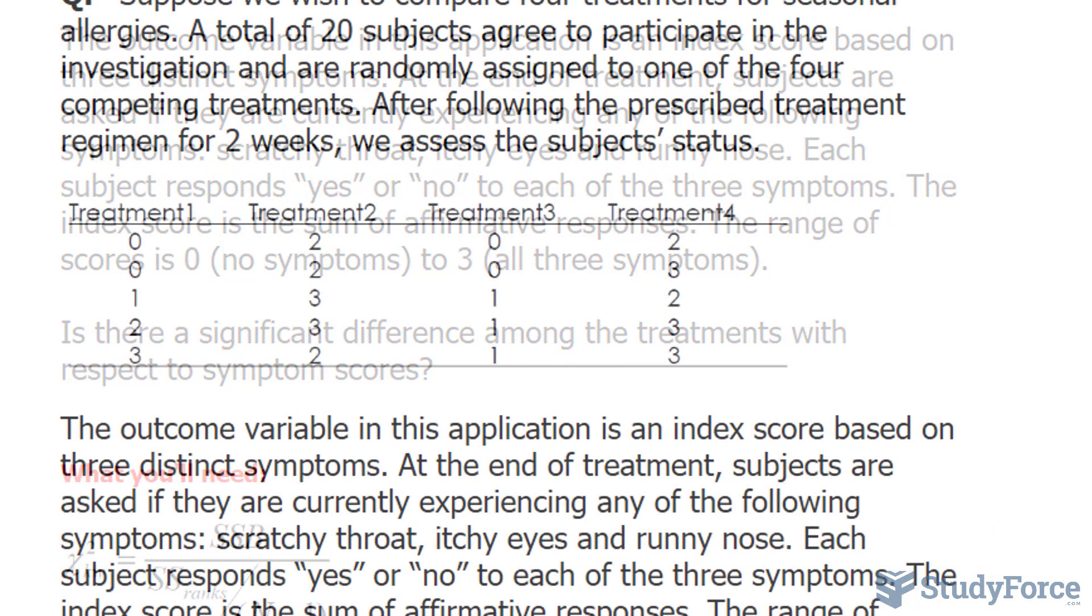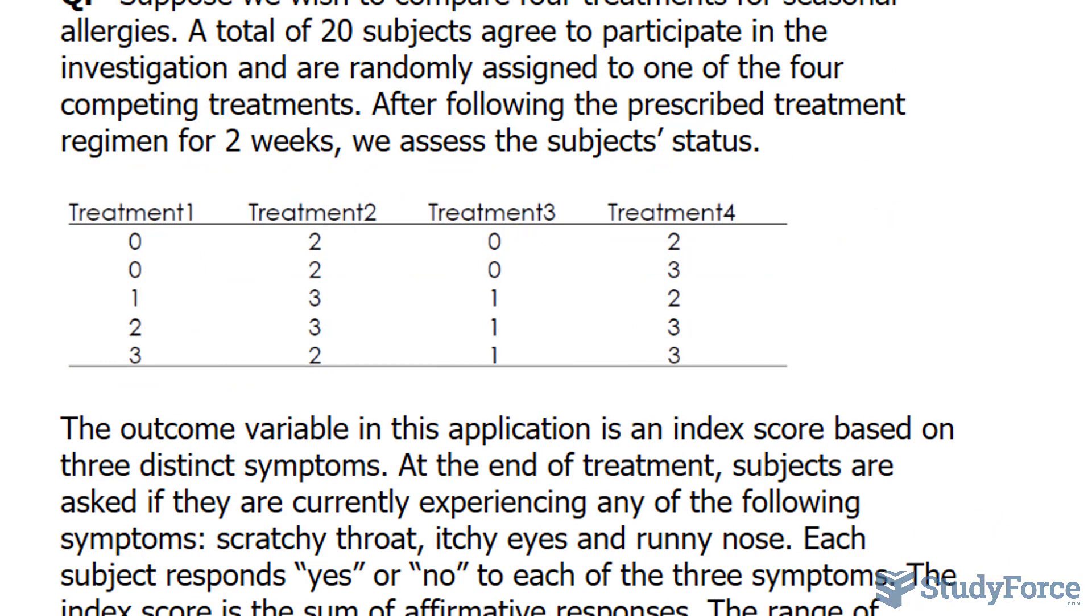Now that we have that out of the way, your next step is to pool all this data together and rank it from lowest to highest. As you can see, the lowest values are zero. We have one, two, three, four zeros. We can't say that this is first, second, third, or fourth.